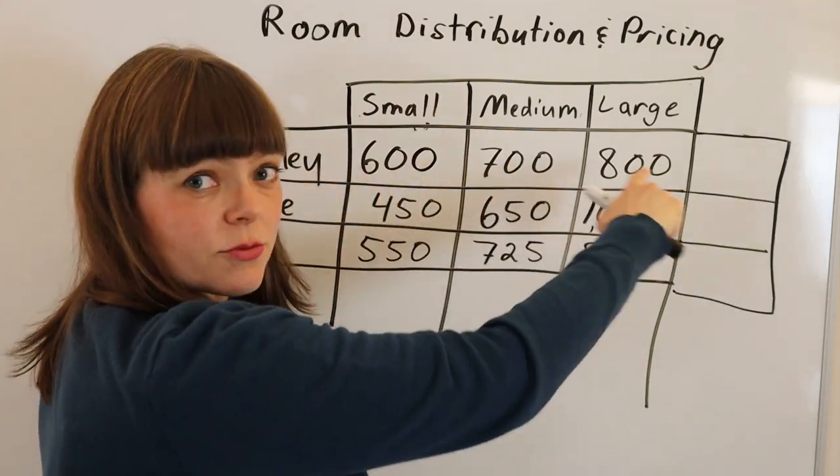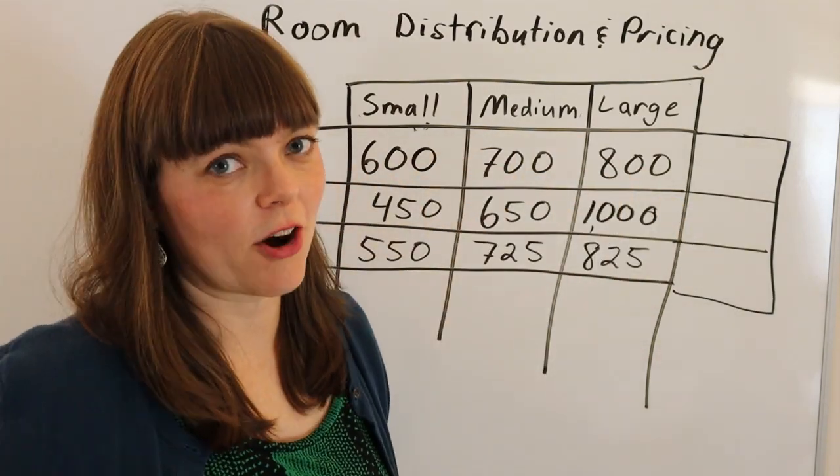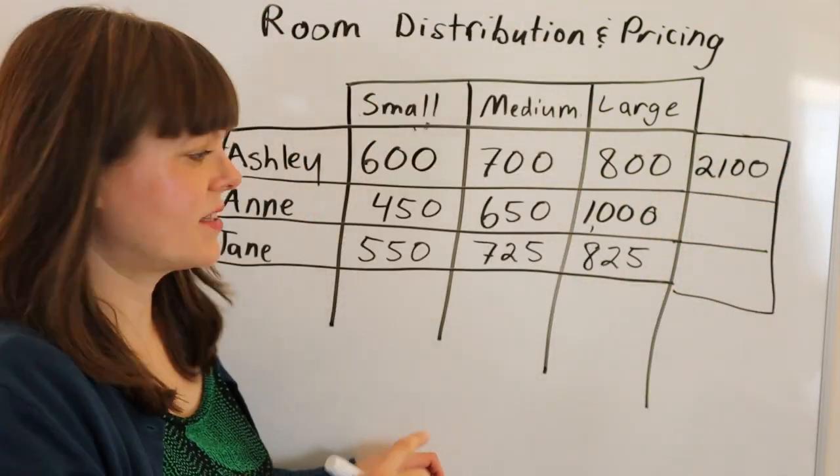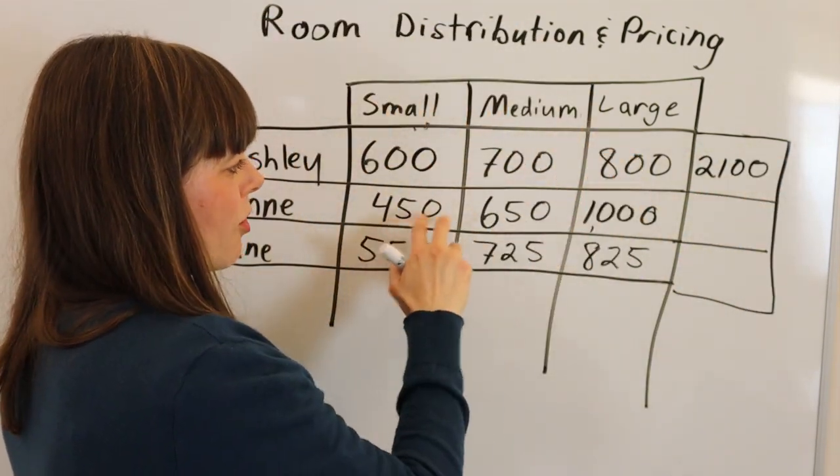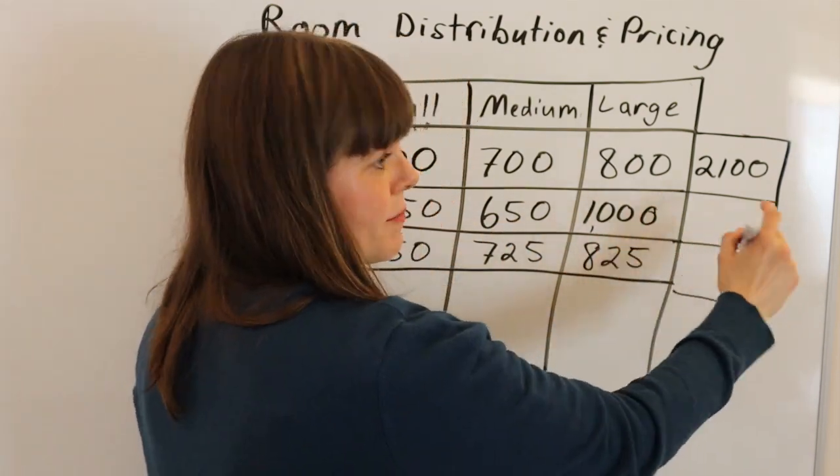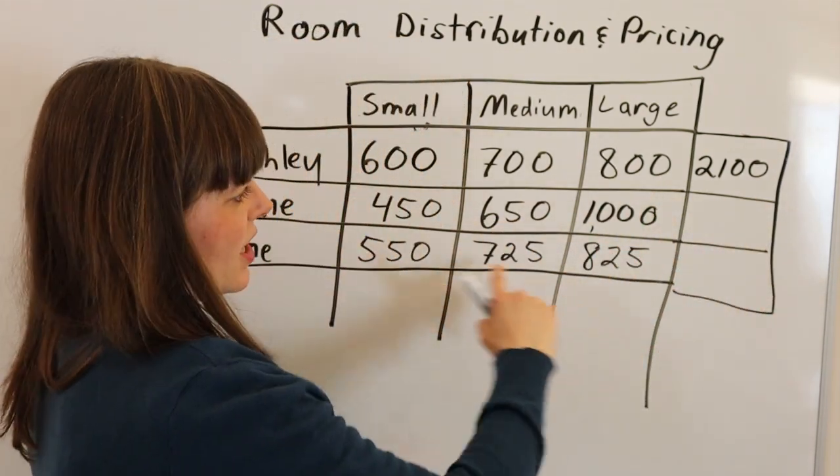If you add this row up, this adds up to the total cost of our apartment. The same with Anne's bids - she broke up the rooms differently: $450, $650, $1,000, and that added up to $2,100 as did Jane's bid.